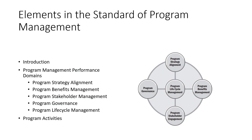We started discussing the PMI Standard of Program Management. If you look at the elements in the standard, we discussed the introduction and then the program management performance domains. There are five different performance domains: program strategy alignment, program benefits management, program stakeholder management, program governance, and program life cycle management. You can refer to my previous videos on this standard for more insight on all these domains.